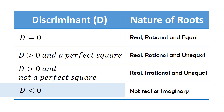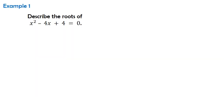Either way, both are correct. But the question is, how are we going to solve for the discriminant? So let's get things done, and let us have our first example: Describe the roots of x squared minus 4x plus 4 is equal to zero.